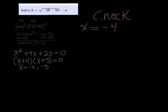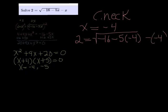We plug negative 4 back into the original equation. So 2 equals the square root of negative 16 minus 5 times negative 4 minus a negative 4. And we're going to simplify it. Now this is a question, we're not sure if it equals or not. That's what we're trying to find out.